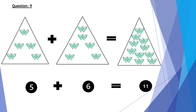Question number nine: five butterflies plus six butterflies equals eleven butterflies. So in the number form, five plus six equals eleven.